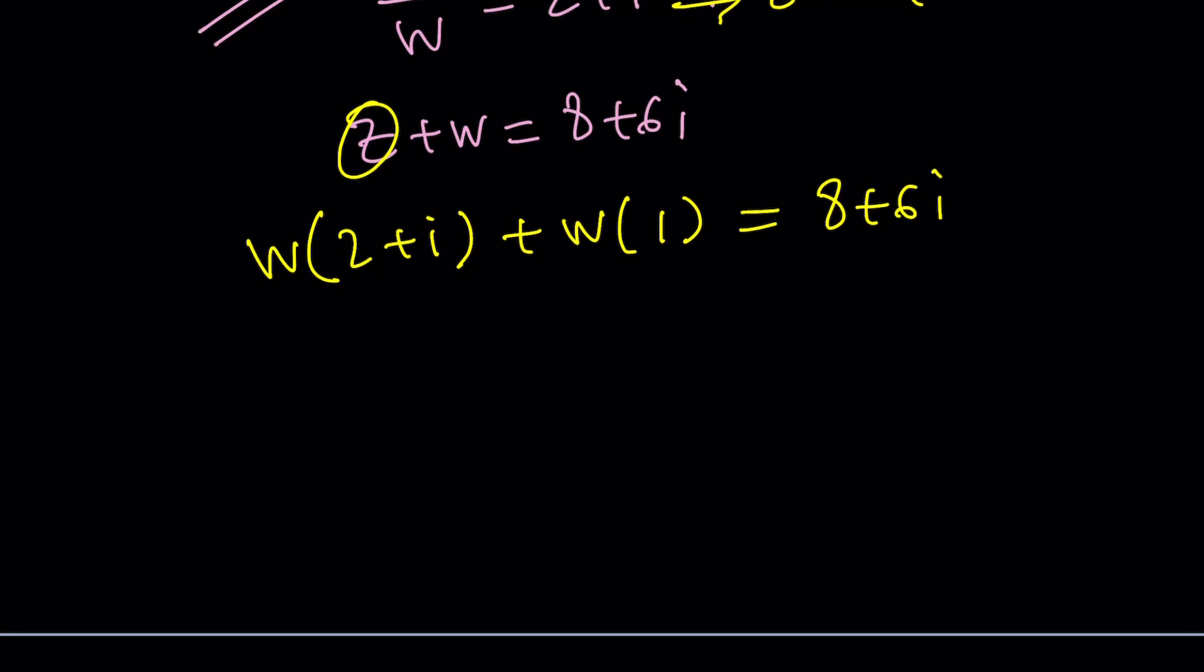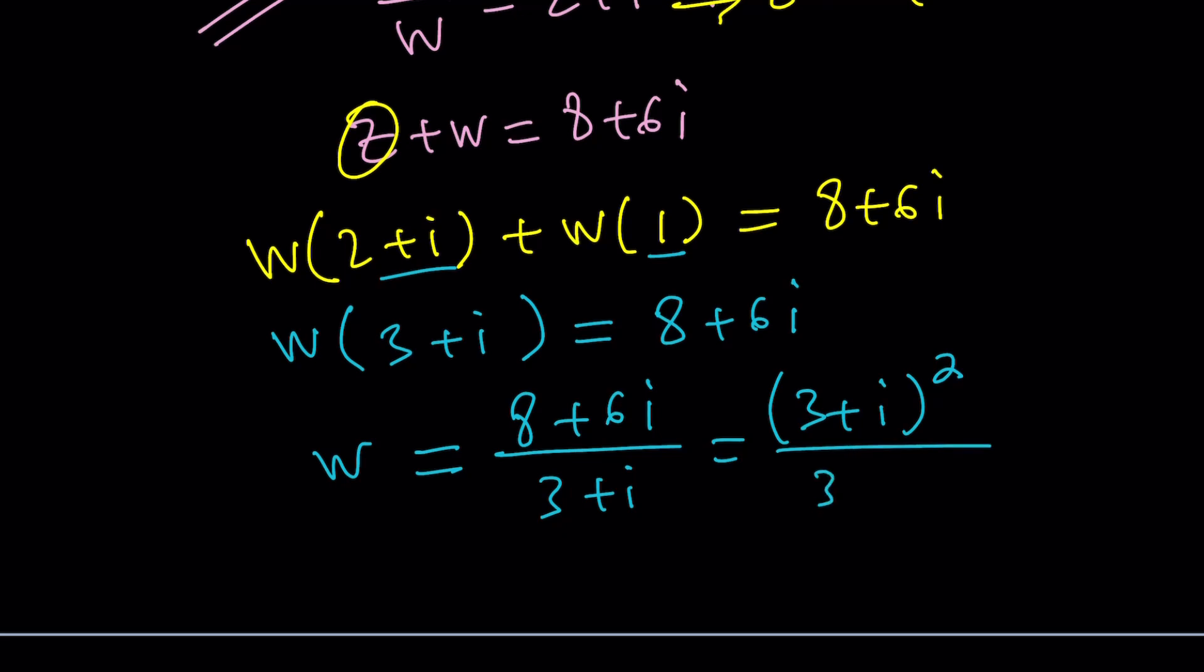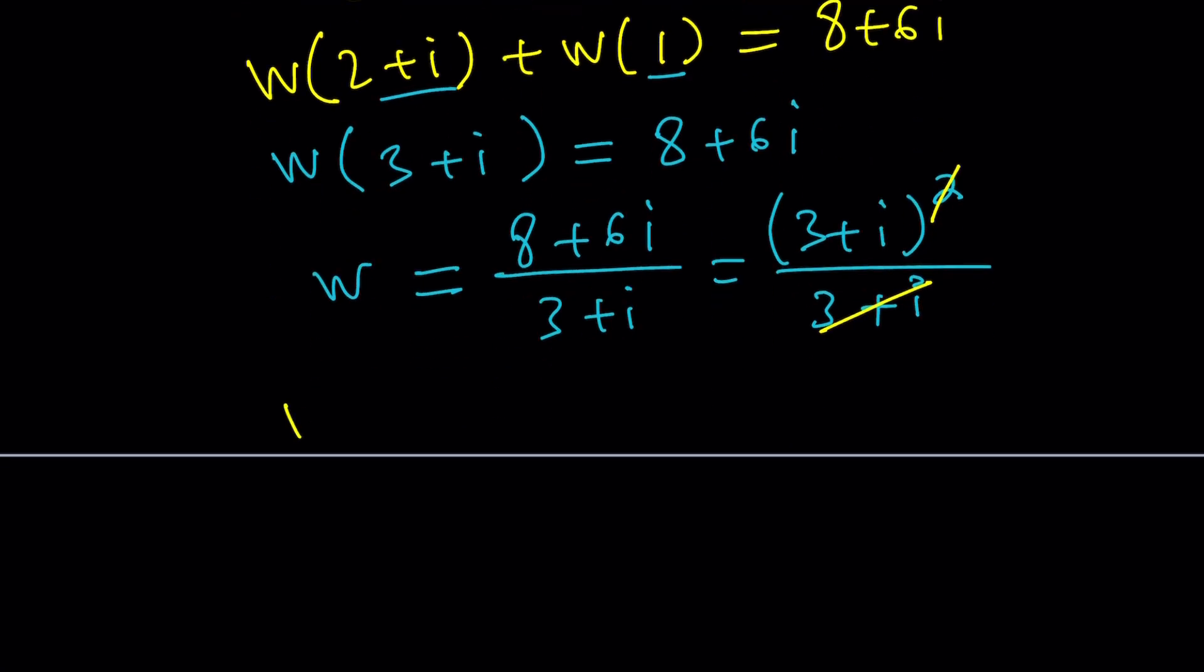And now what do we do next? Factor. Oh, by the way, I'm sorry about this notation, but this is not Lambert's w function. Don't get confused because we've just done a video on that. This is just a complex number. So we can factor out a w and that gives us 2 plus i plus 1, which is 3 plus i. Do you remember that from first method? Yes, you should. And now we're back to square one. And remember, this is 3 plus i squared, right? Isn't it? You can check it out if you want. Divided by 3 plus i. And the 3 plus i is going to cancel out. And we're going to end up with w equals 3 plus i.